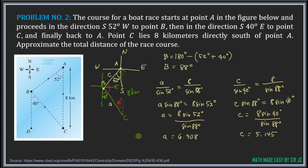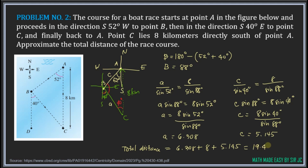The approximate total distance equals A + B + C = 6.308 + 8 + 5.145 = 19.453. Therefore the total distance of the race course is approximately 19.453 kilometers.